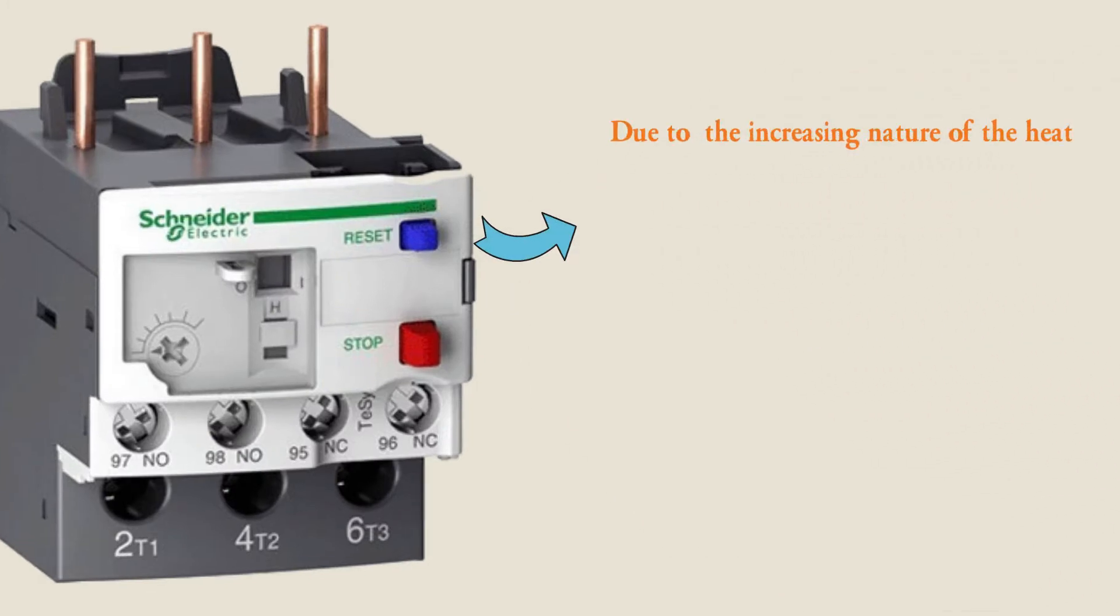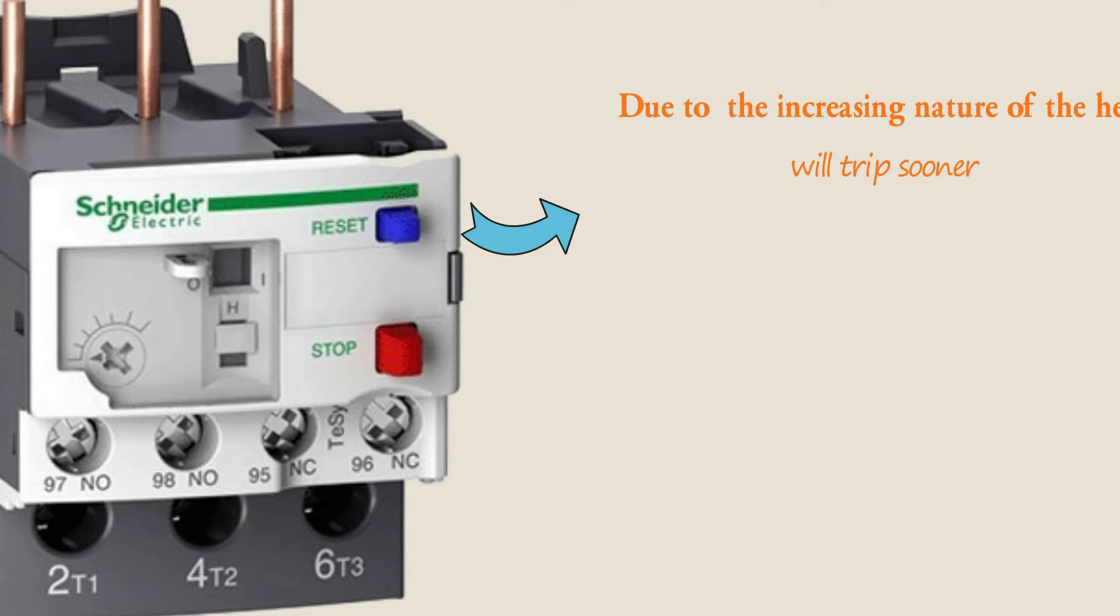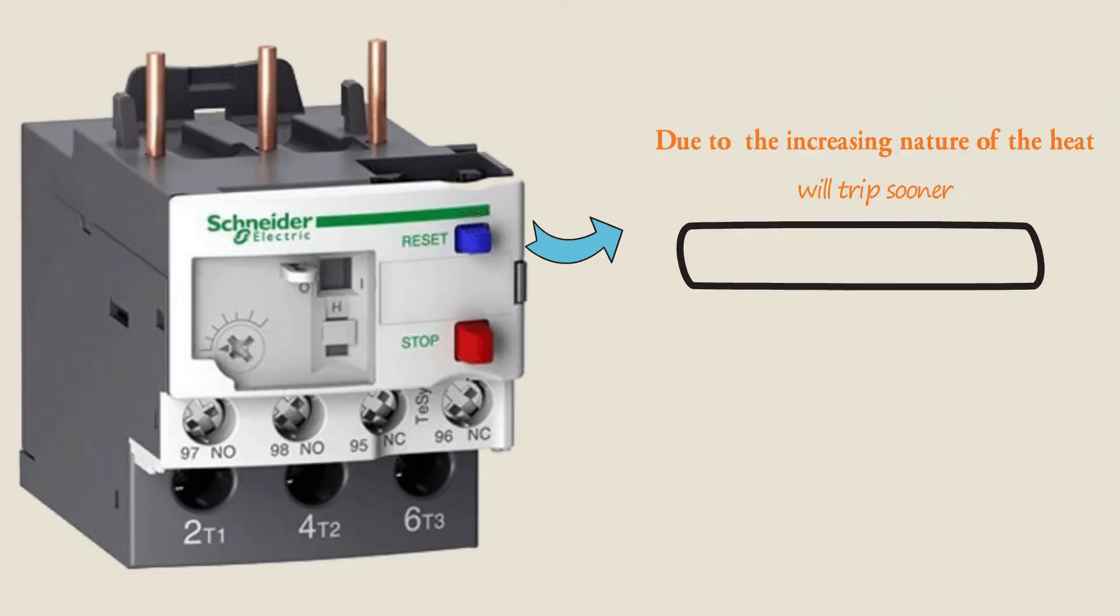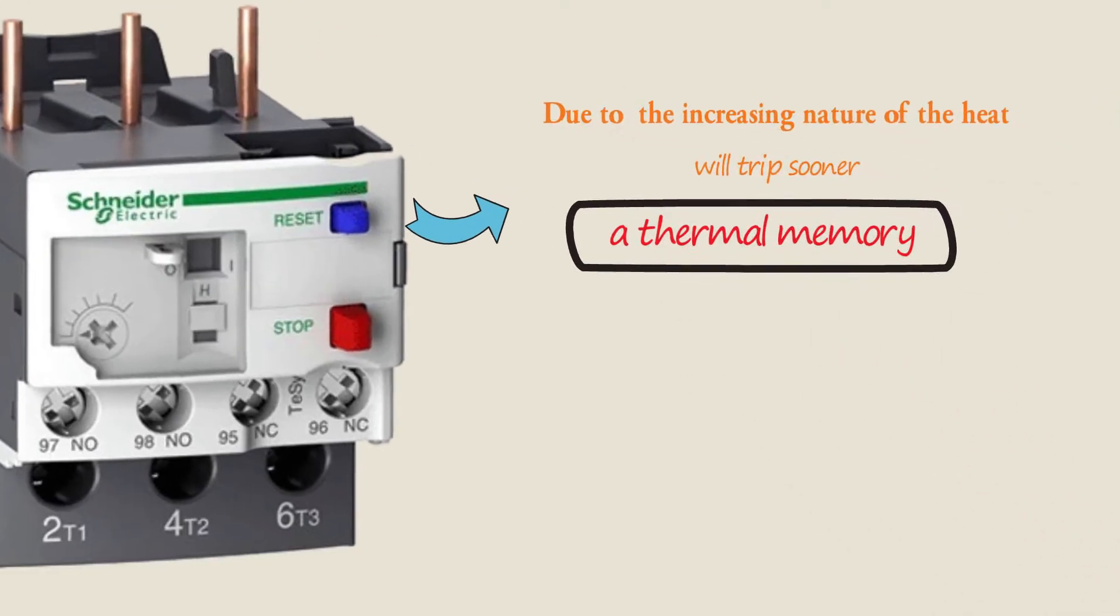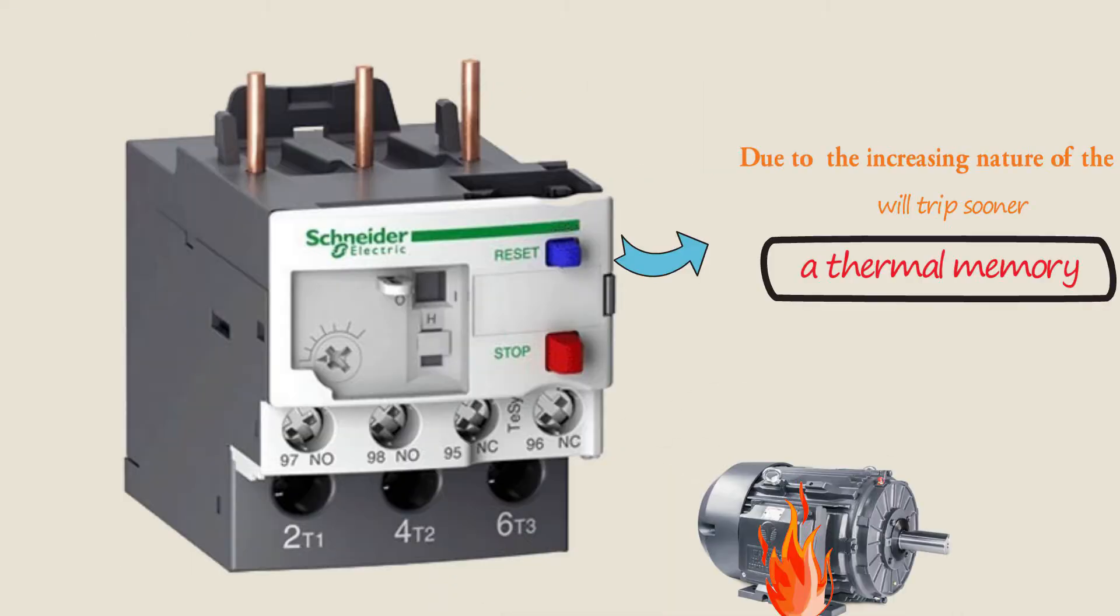The overloads that are previously triggered will trip sooner because of something commonly called thermal memory. Motor damage can happen if the overload relays repeatedly reset without correcting the cause of the overload event.